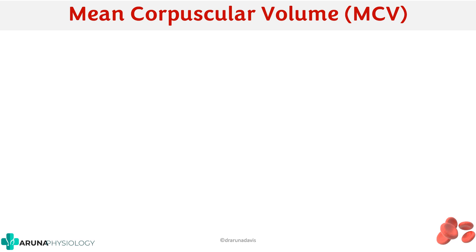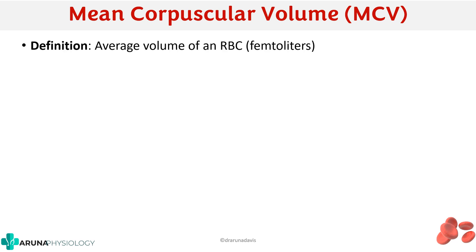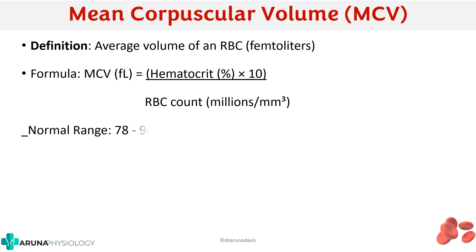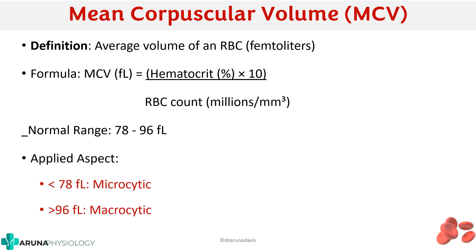There are three important red cell indices. The first one is mean corpuscular volume, or MCV. Mean corpuscular volume is the average volume of an RBC, and the unit is femtoliters. The formula to calculate MCV is hematocrit (also called packed cell volume) multiplied by 10, divided by RBC count. The normal range is around 78 to 96 femtoliters. If it is less than 78, it is microcytic; if it is more than 96, it is macrocytic.